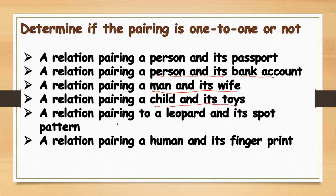Example number five: a relation pairing a leopard and its spot pattern. Do you know that a leopard has a unique spot pattern? It means that each leopard has its own unique pattern, and so we can say that this example is a one-to-one function.